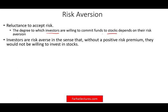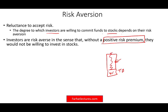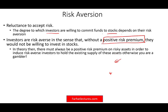Investors are risk averse in the sense that without a positive risk premium, they would not be willing to invest in stocks. A positive risk premium is that extra return above the treasury bill rate — above the 4% treasury bill. You would only accept risk if you are compensated for this extra premium. So in theory, there must always be a positive risk premium on a risky asset in order to induce risk-averse investors to hold the existing supply of the asset. Otherwise, you are a gambler.